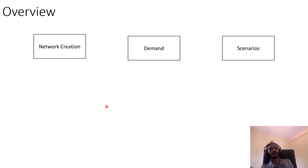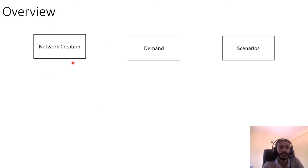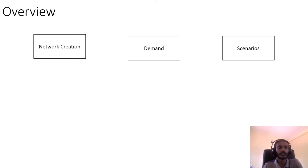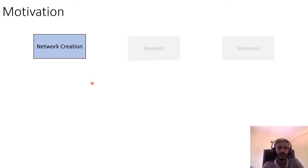As an overview, when creating a simulation you need a network and you need demand — a certain set of people, vehicles, or anything that has to be moved in the network. Once those two are done you can create different scenarios and evaluate them. For this session I'm interested in the network creation part.